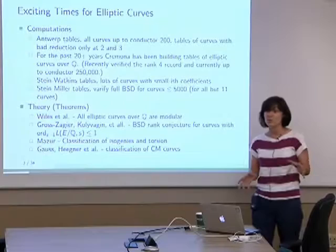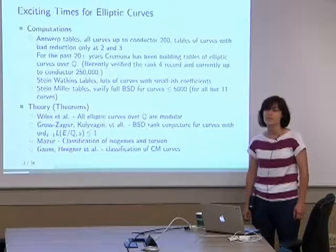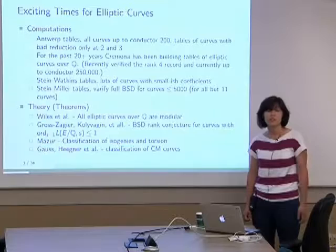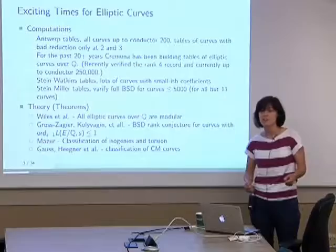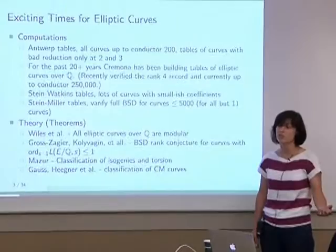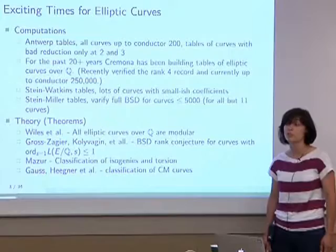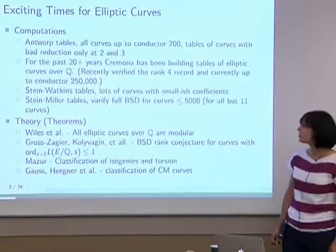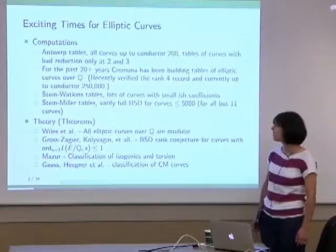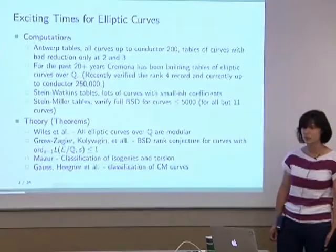If you go about this in an orthogonal manner, you can look at the Stein-Watkins tables. Writing the elliptic curve in its short Weierstrass form — y² = x³ + ax + b — you can iterate over a and b in a more intelligent way and just throw out all curves where the conductor is too large, getting huge tables of curves with small coefficients. And even more recently, there are the Stein-Miller tables, which verify the full Birch–Swinnerton-Dyer conjecture up to curves with conductor ≤ 5,000 for all but about 11 curves.